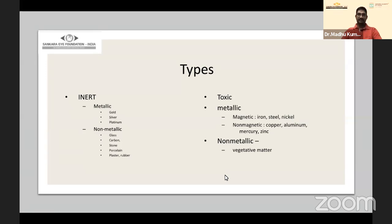Coming to the types of foreign body, it's very important to know the type, which we can determine to a certain extent by taking a detailed history. This is important because management depends on what type of foreign body you are dealing with. The basic types can be divided into inert and toxic ones.